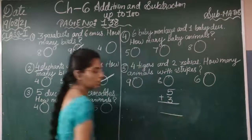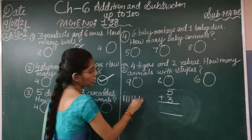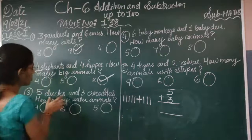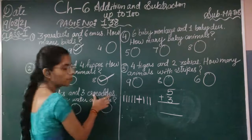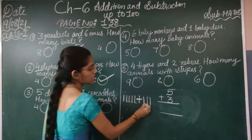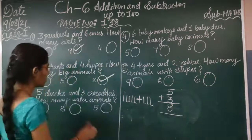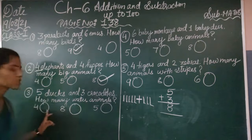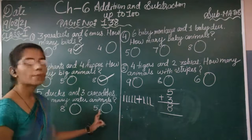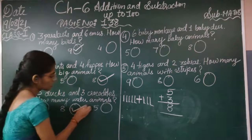We have to add 5 plus 3. Draw the lines first: 1, 2, 3, 4, 5 for ducks. Then 3 lines for crocodiles. Count all lines: 1, 2, 3, 4, 5, 6, 7, 8. Total value is 8. That means 5 plus 3 is 8. Check the options: first option is 4, next option is 8, next option is 5. The correct answer is 8, so we tick 8.